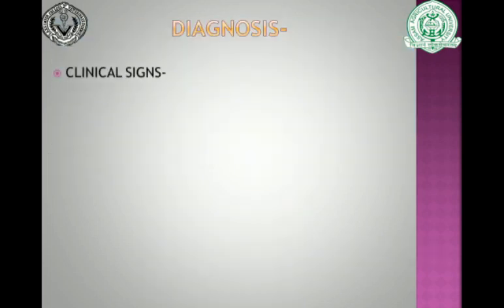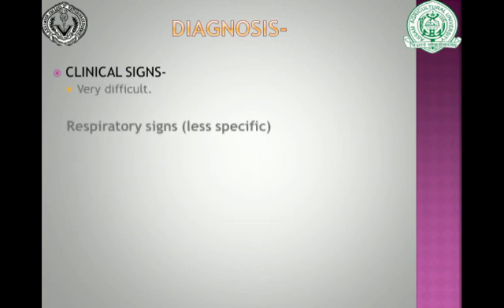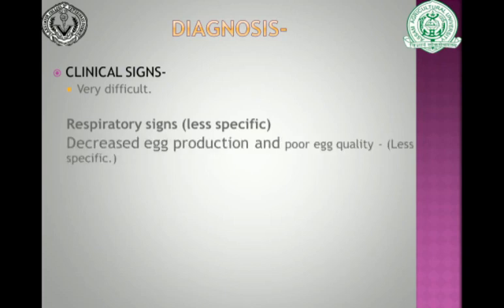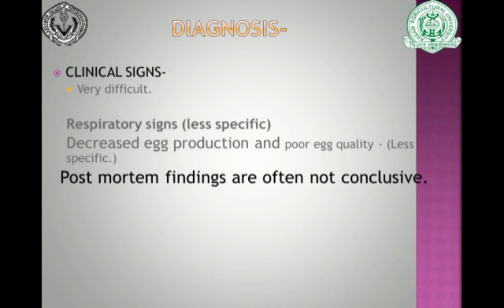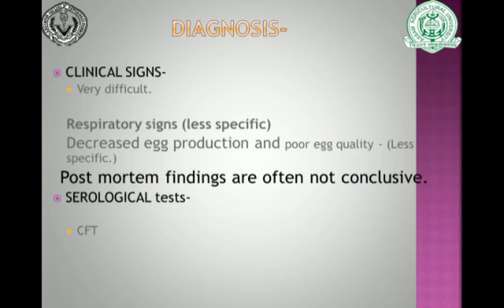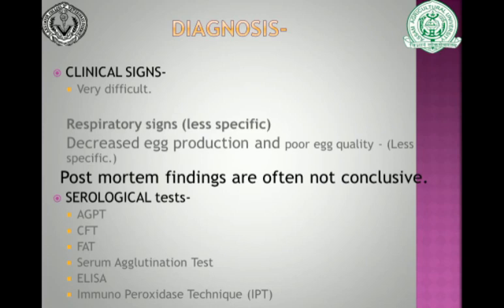Diagnosis can be made by clinical signs, which is difficult since respiratory signs and reduced egg production with poor quality are non-specific and resemble other diseases. Post-mortem findings are also often not conclusive. More specific tests are required, including serological tests such as the complement fixation test (CFT), fluorescence antibody test, serum agglutination tests, ELISA, and immunoperoxidase technique.